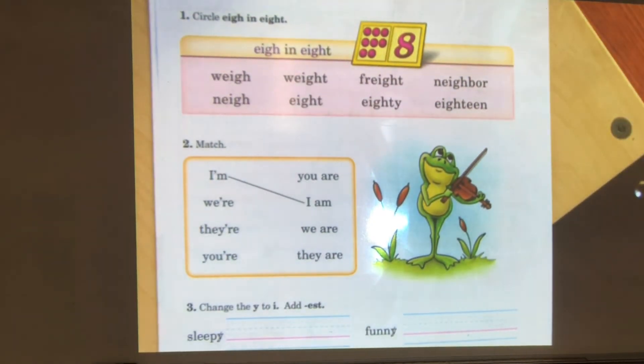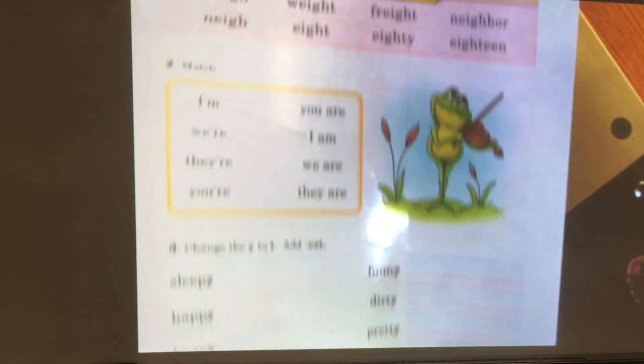Let's take a look at section one. It says circle A in eighth. So, you're looking at the special sounds and you circle only A in eighth. A in eighth is called E-I-G-H. Let's take a look at section two.